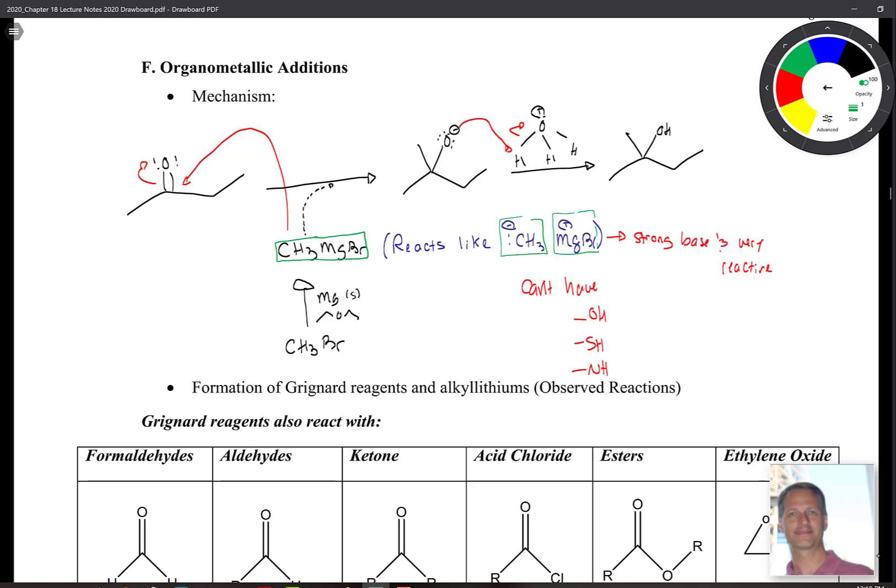Recall that this reacts like it's a free CH3 minus and an MgBr plus. It's not really, but it reacts like that. It's a strong base, and it's very reactive. What happens for a reaction is we see these electrons coming over, grabbing hold of that carbon. If you recall from our previous example, that's where your delta plus is. That'll give you a minus charge up here. Then your second step, you would get your protonation. Here, again, to highlight, this is step number one.